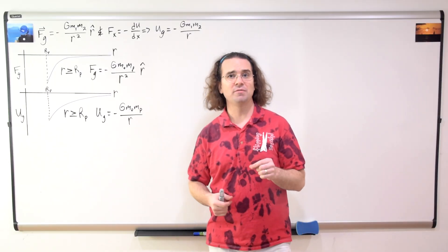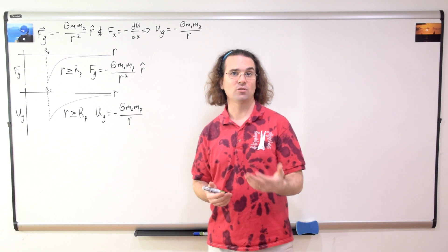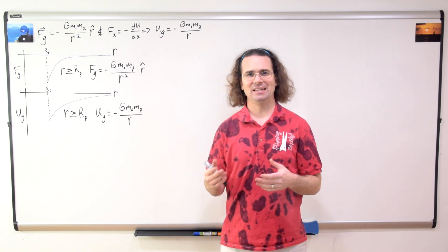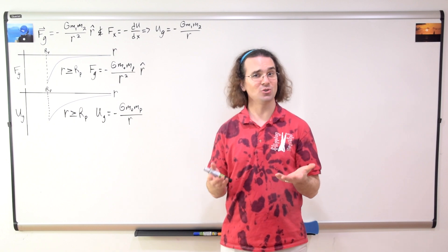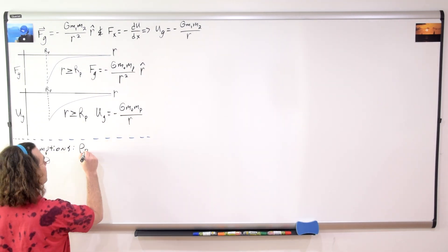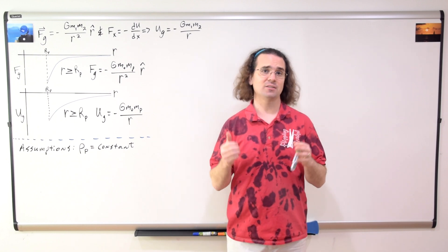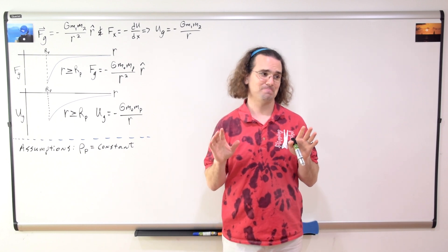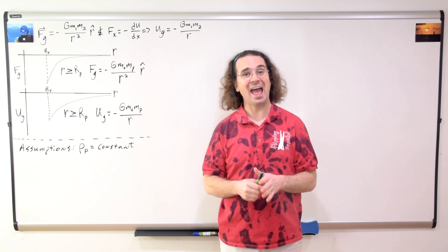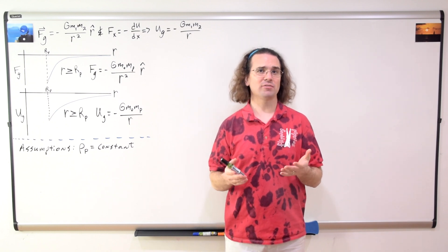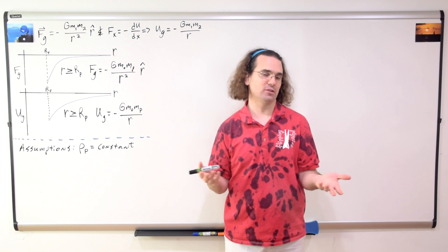Now we need to move the object to inside the planet, where r is less than the radius of the planet. Here is where it starts to get a bit tricky and we need to assume a few things. We need to assume the planet has a constant density. No planet has a constant density; however, it is a good thought experiment and helpful for learning.